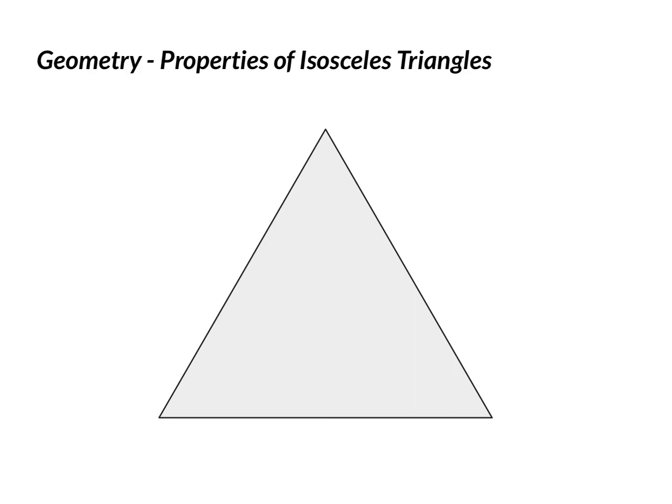I've talked in a previous video about the properties of isosceles triangles, specifically that an isosceles triangle has two sides that are congruent to one another. And because of those two congruent sides, then these angles that are across from them are also congruent.